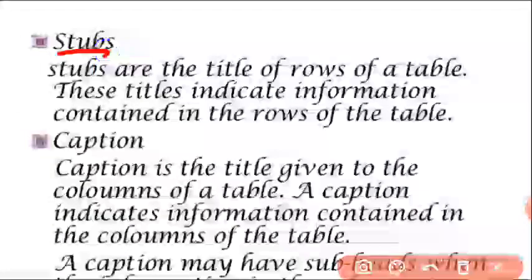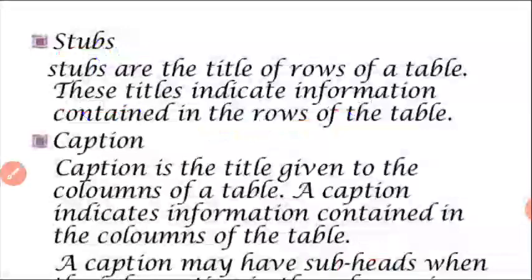What is a stub? Stubs are the titles of rows of a table. These titles indicate the information contained in the rows of the table. After that is caption — caption is the title given to the column of a table. So the column title is caption, and the row title is stub.